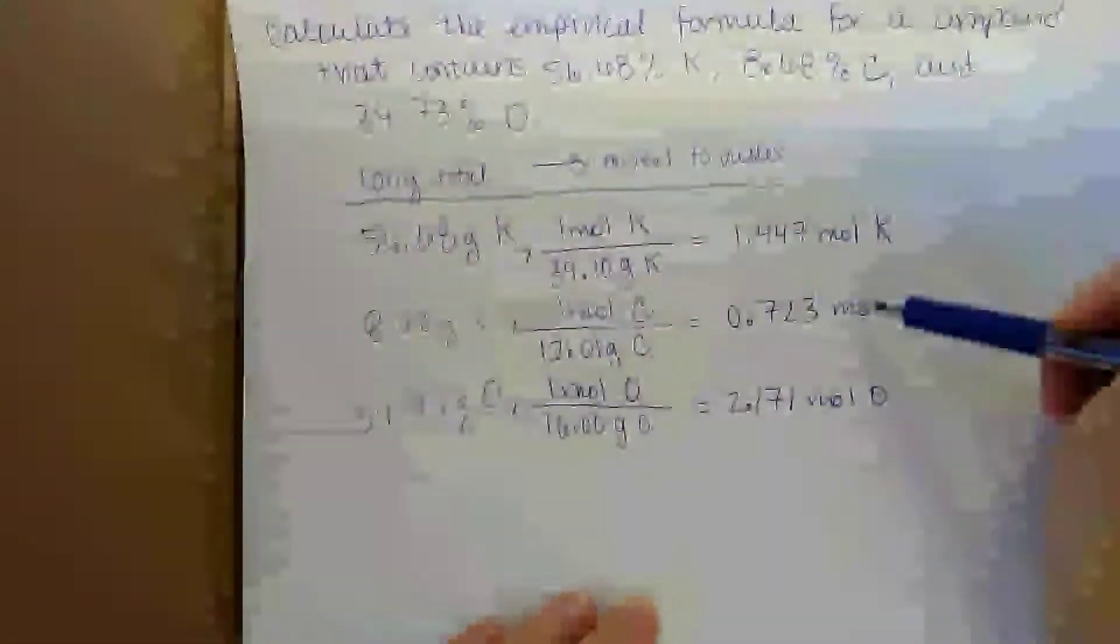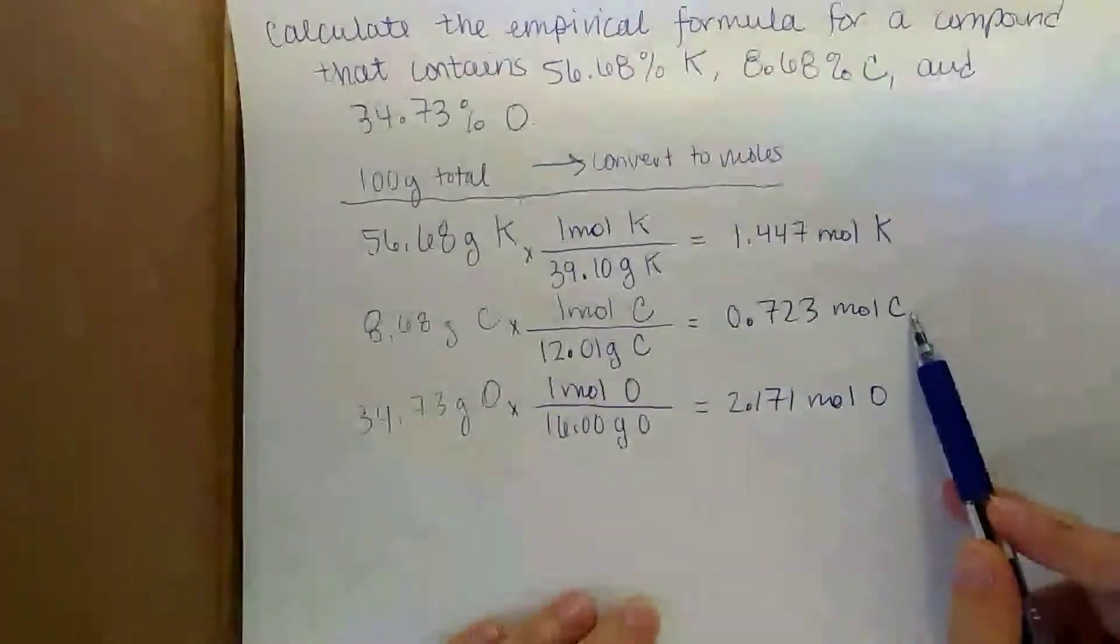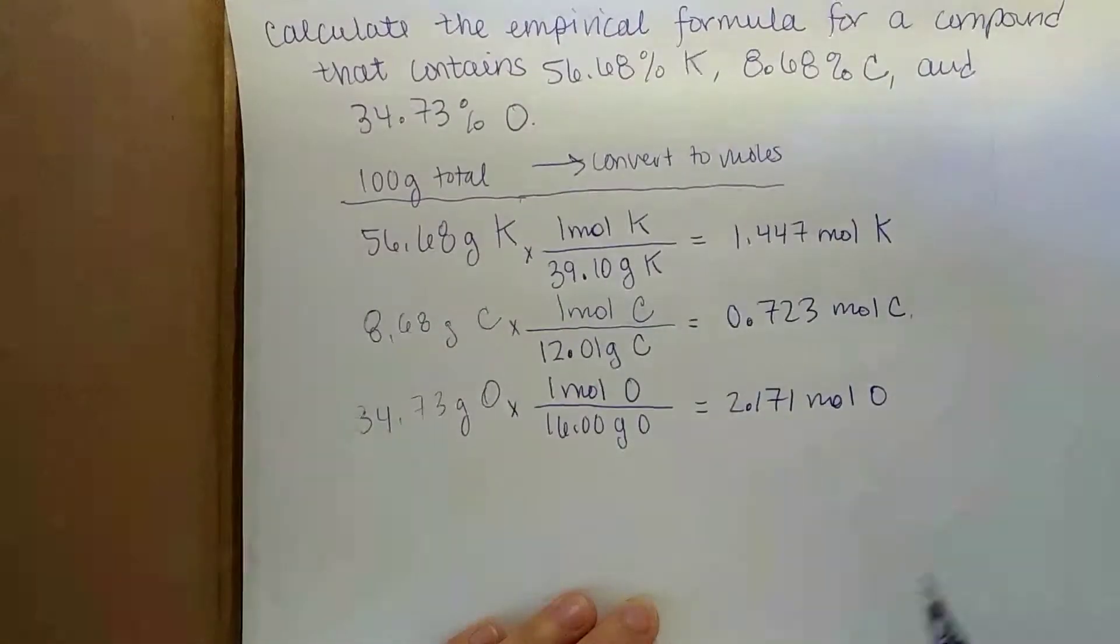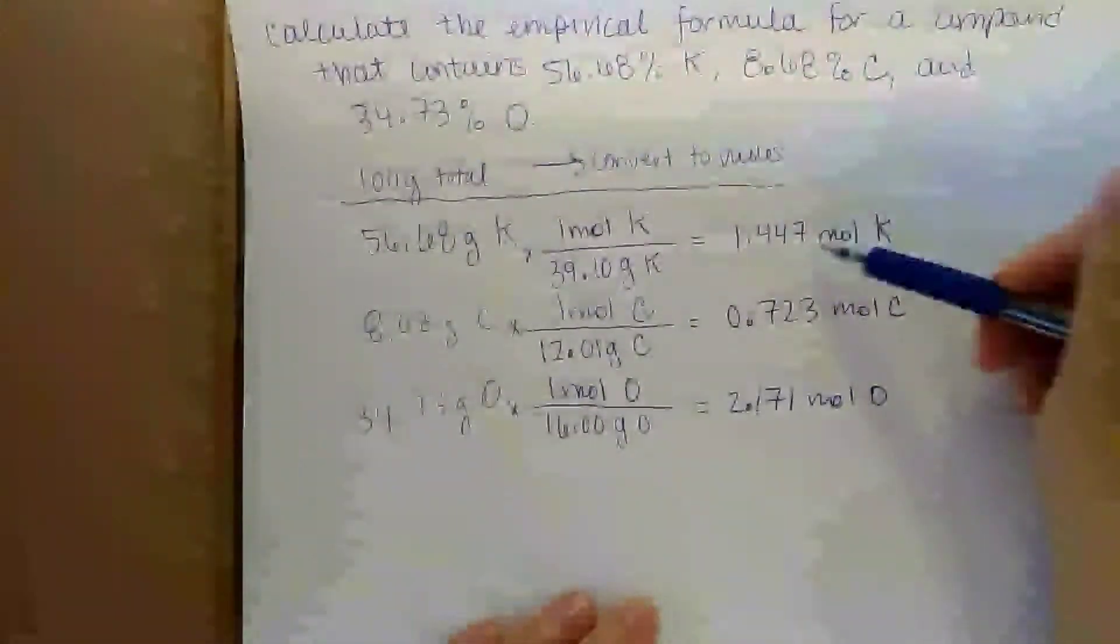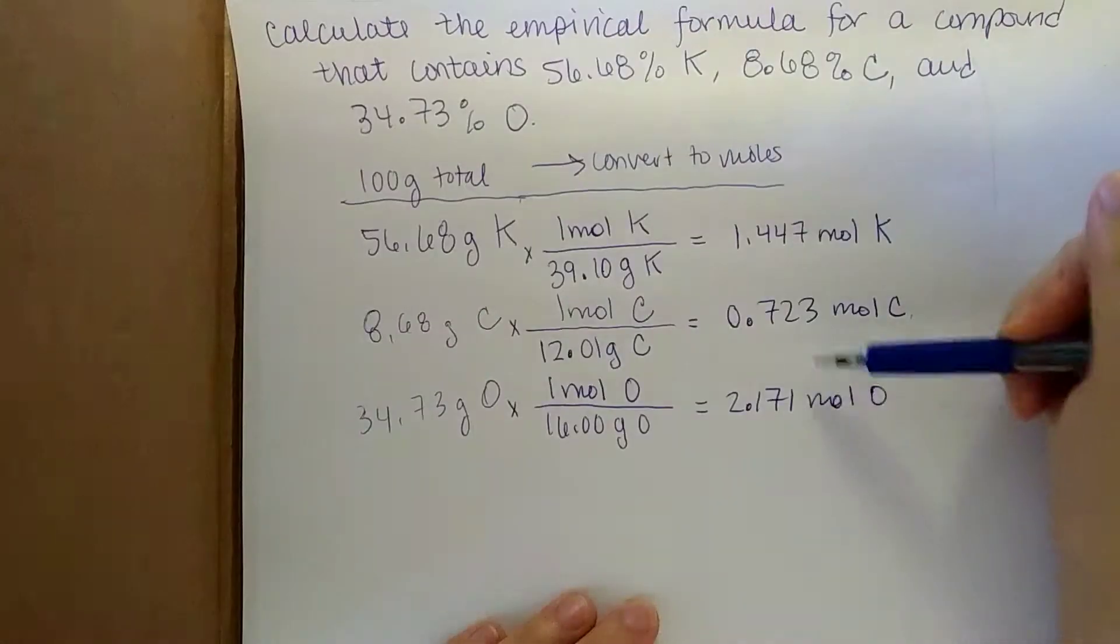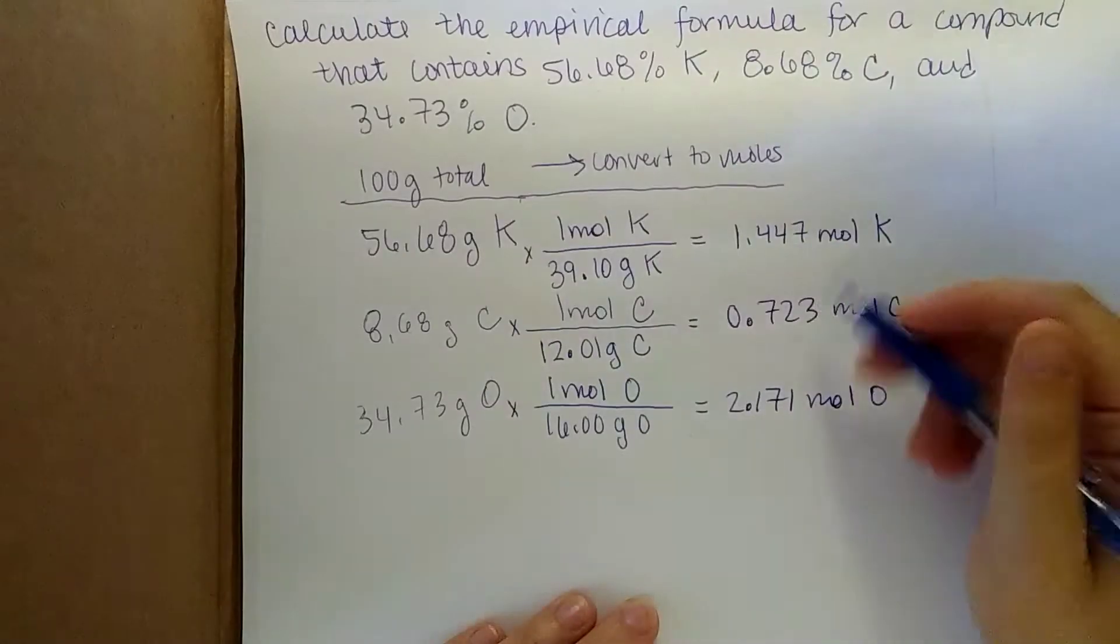So now we have all of our quantities converted to moles. And we want to find the ratio of the different values of moles in order to get to the empirical formula. So what we're going to do here is take each one of these numbers and divide it by the smallest number of moles that we have, which in this case is the carbon.